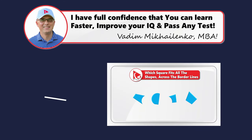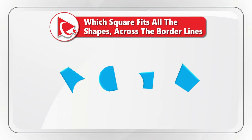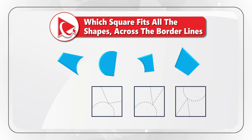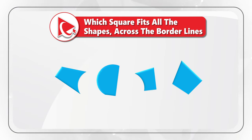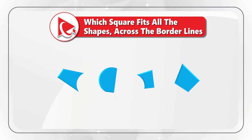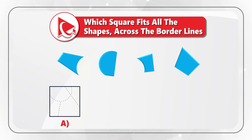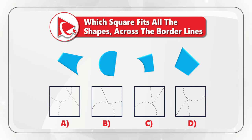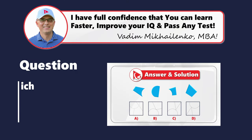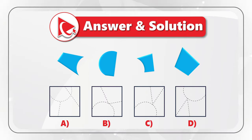This question was initially designed to test your spatial reasoning, but also could be used to test your cognitive abilities and analytical skills. You're presented with four shapes, and you need to find the square which fits all the shapes across the borderlines. You need to select one square out of four possible choices based on the borderlines presented. Choices are A, B, C, and D. Take a close look to see if you can identify the item. Try to see if you need to rotate the shapes or do any other manipulations with the shapes before trying to fit them. Let's move forward and I'll share with you my version of the answer.